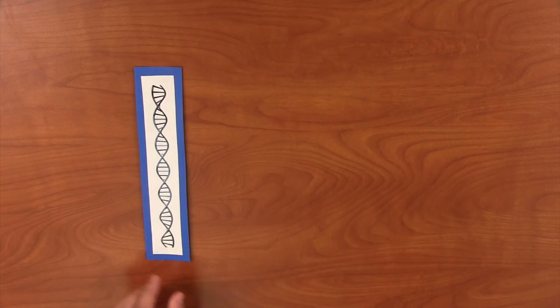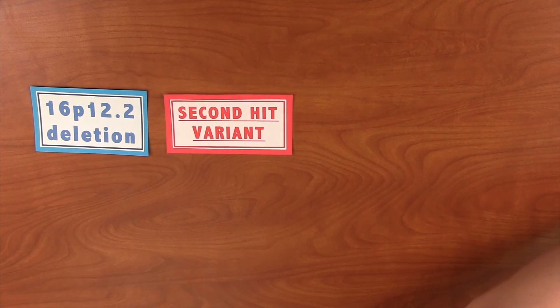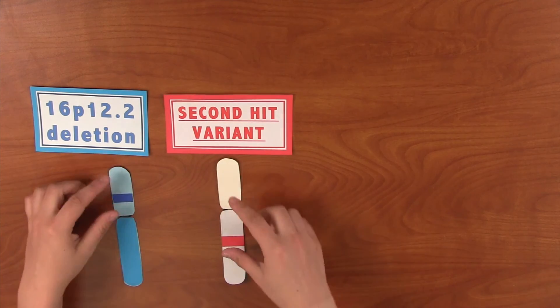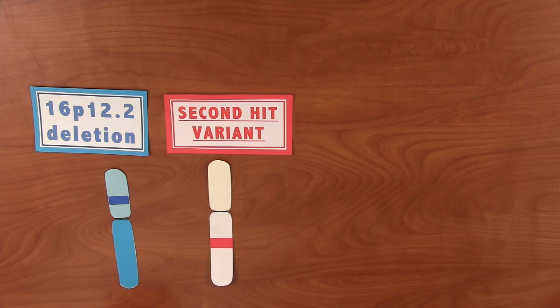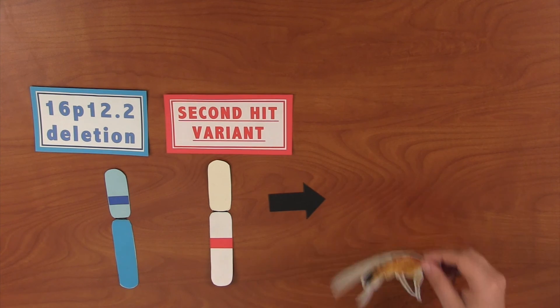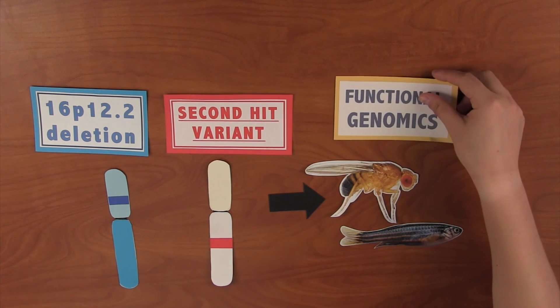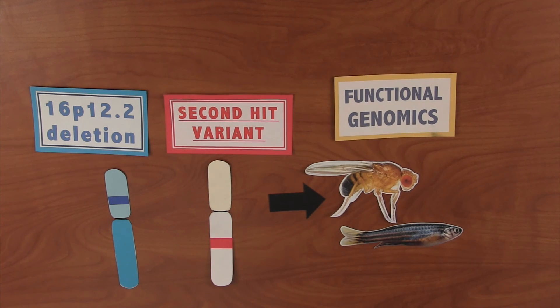Lastly, our research involves testing our possible conclusions in animal models. Selected genes that we suspect are also involved in the disease pathway, identified from WGS, are used in animal studies on flies and zebrafish. This technique is called using functional genomics in model organisms and is possible because all living organisms have DNA.